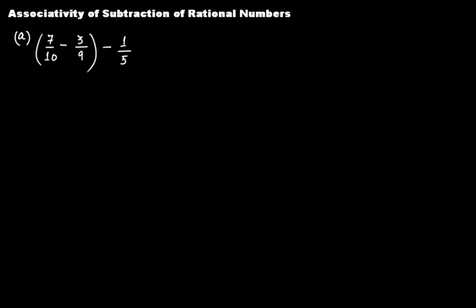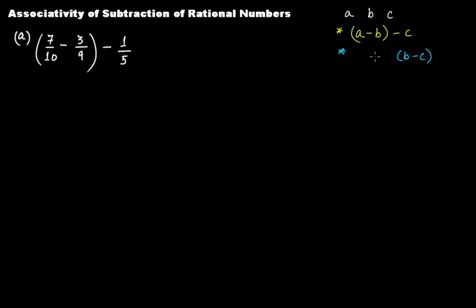By the associativity of subtraction of rational numbers we mean that if we have three rational numbers a, b, and c, then we take two cases. The first one is (a minus b) minus c — first you subtract b from a, then whatever result you get, you subtract c from it. Another case is you first find out b minus c and then subtract that result from a.